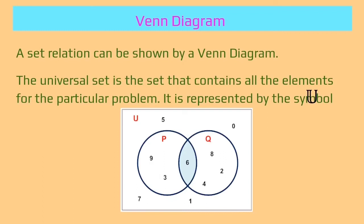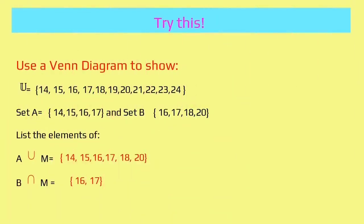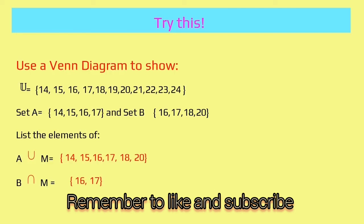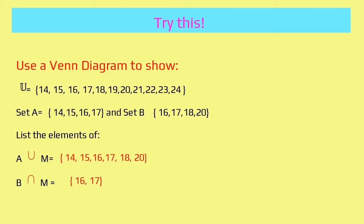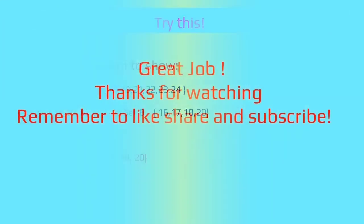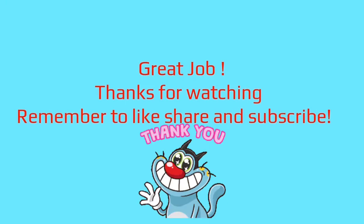Remember you can go back at any time and review this lesson. I want you to try to make your very own Venn diagram. You have your universal set, set A, set B, along with the elements showing what is in the intersection and the union. Construct your Venn diagram and show it to your teacher or guardian. Thanks for watching — remember to like, share, and subscribe. Take care!